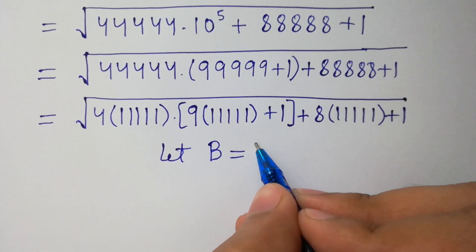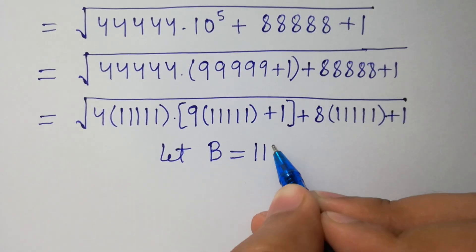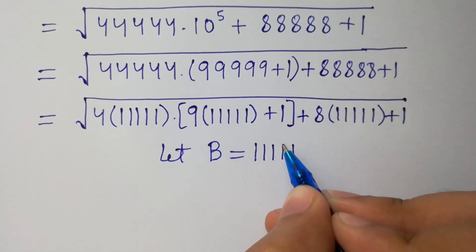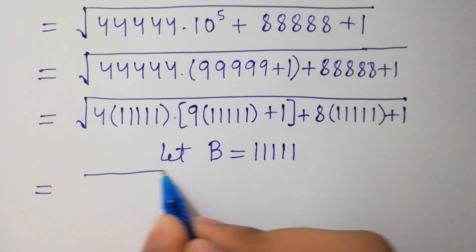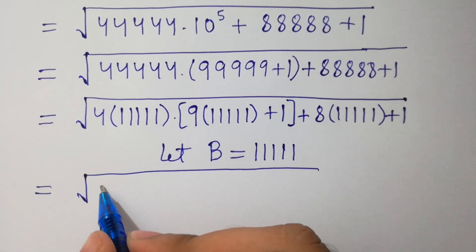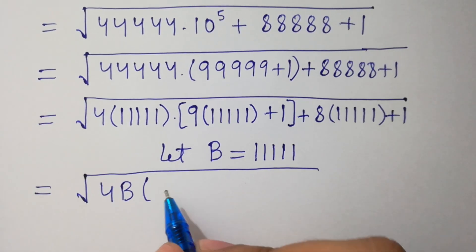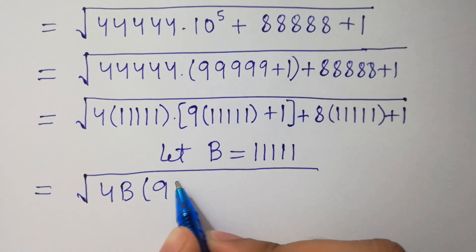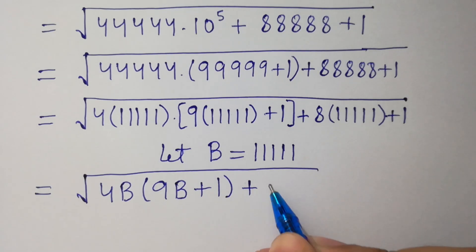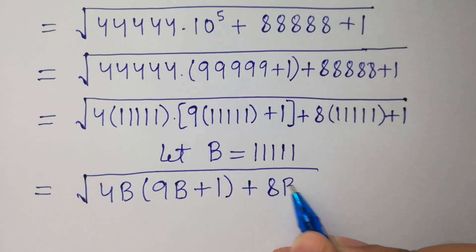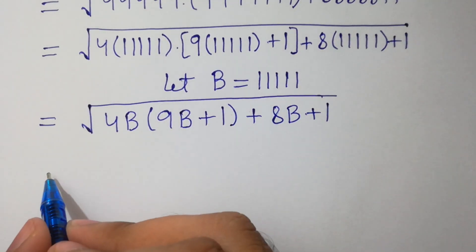Let's suppose that b equals 5 times 1 × 10^5. Then we have the square root of 4b times bracket 9b plus 1, plus 8b plus 1. Clear, very simple — simplify here.